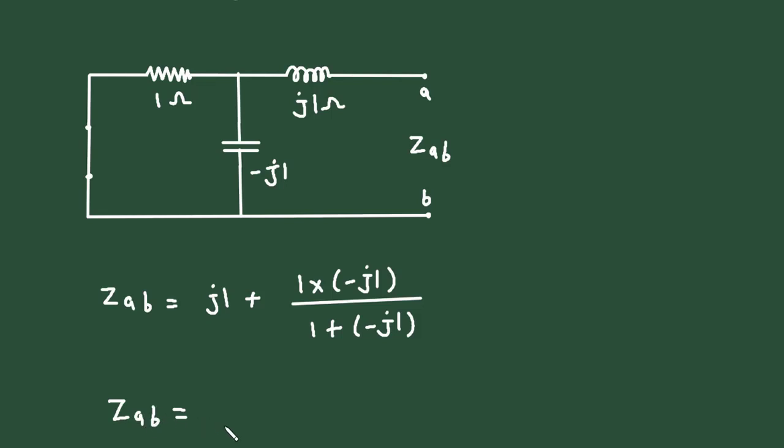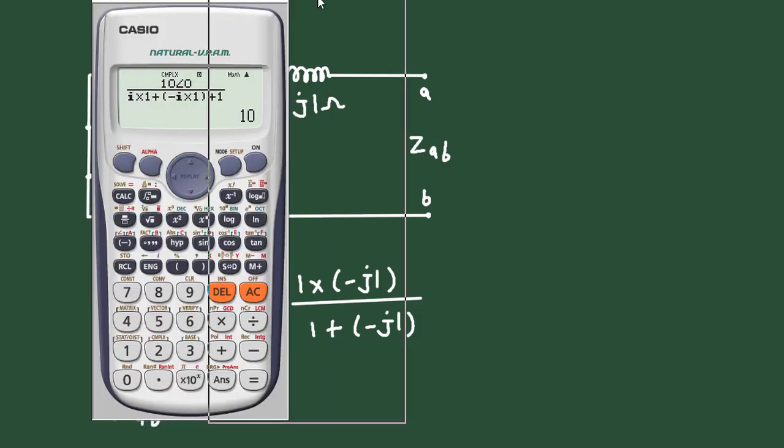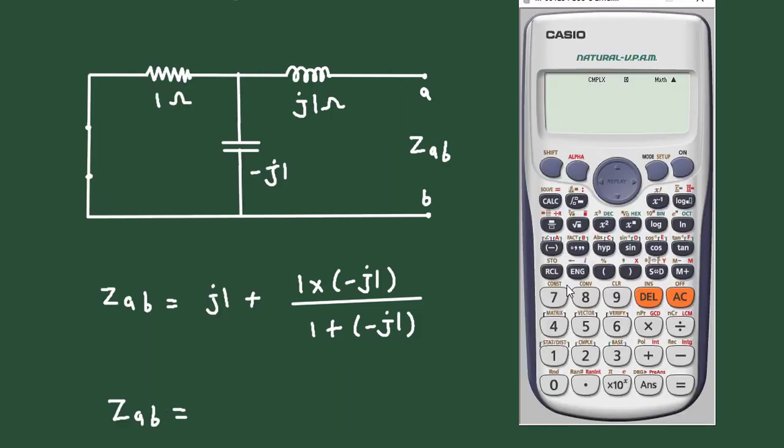So Z_ab equals j1 plus 1 times minus j1 divided by 1 plus minus j1. Now it is equal to 0.5 plus 0.5j.